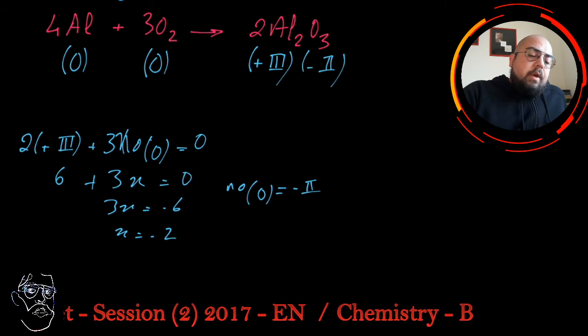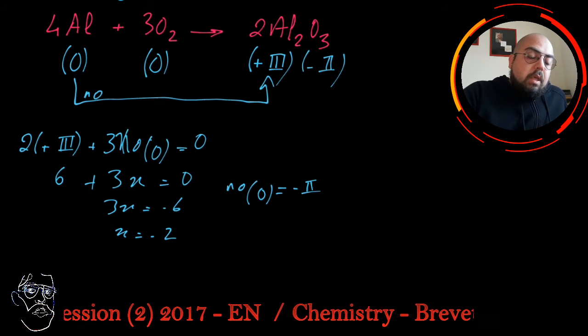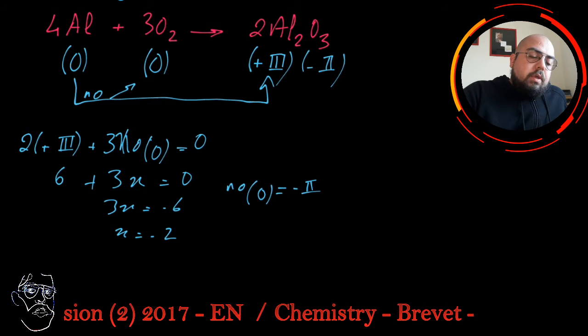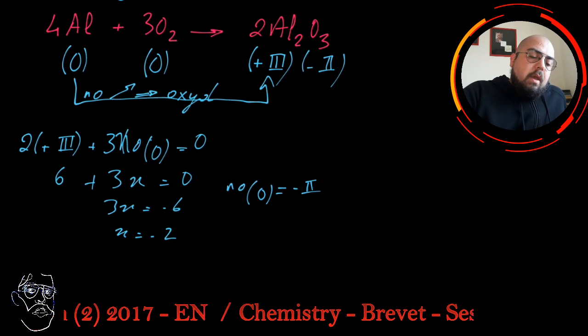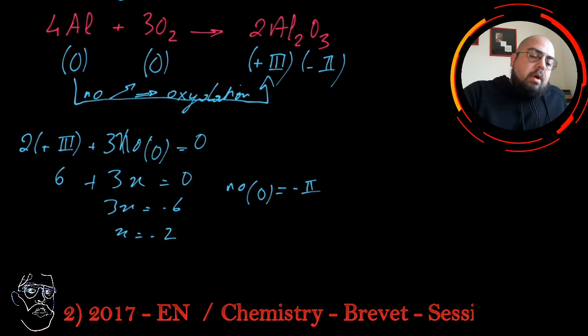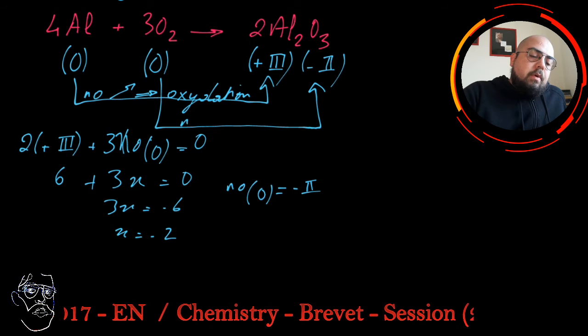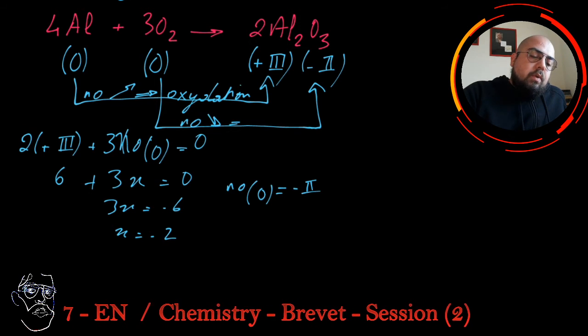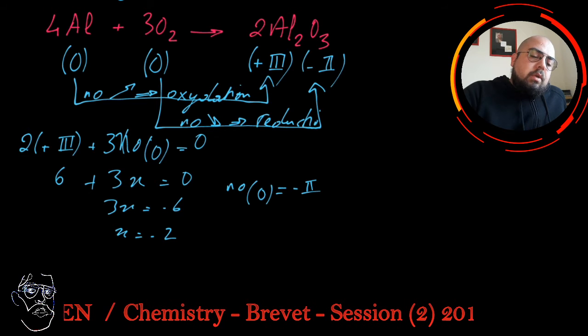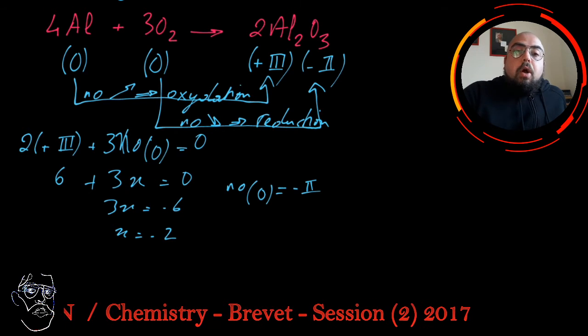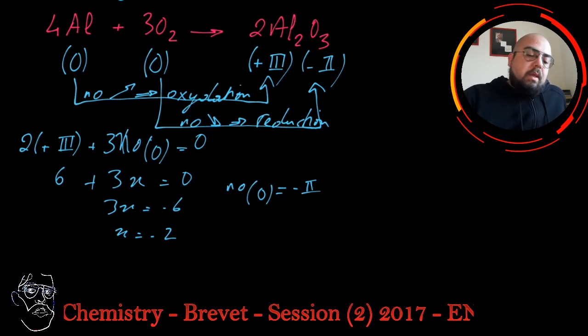As you can see for Al, the number of oxidation is increasing from zero to plus 3, so I have an oxidation. And as for oxygen, the number of oxidation is decreasing from zero to minus 2. The number of oxidation is decreasing, so we have a reduction. Since I have an oxidation and reduction, it's an oxidation-reduction reaction which is taking place in this case.